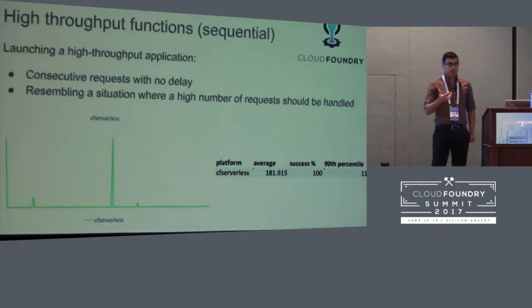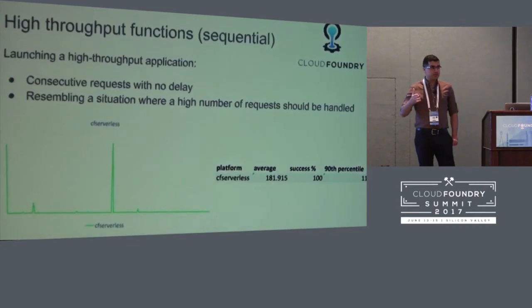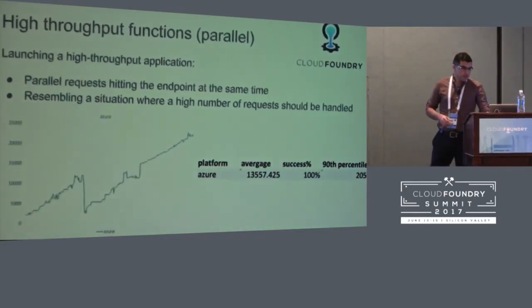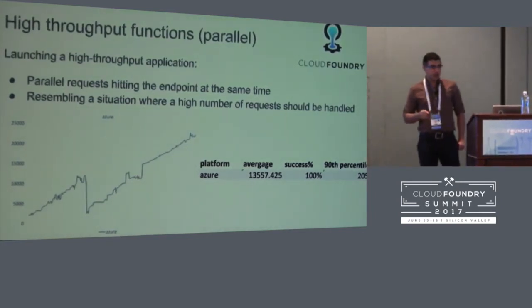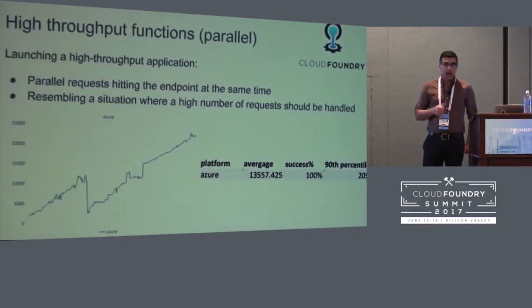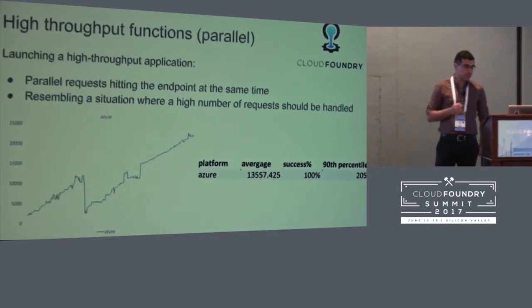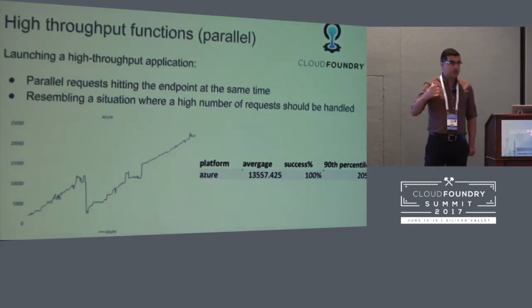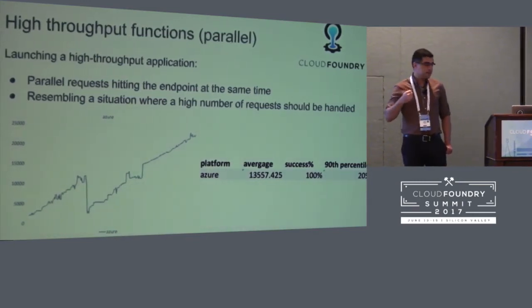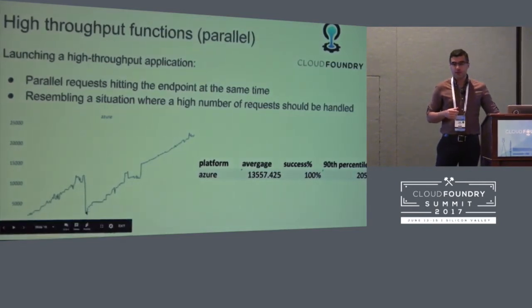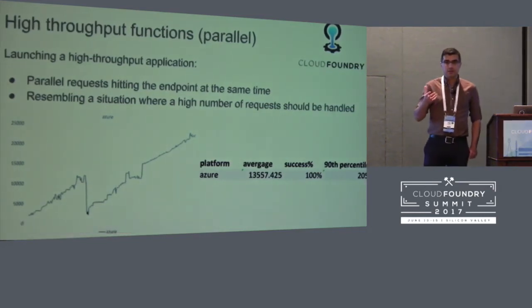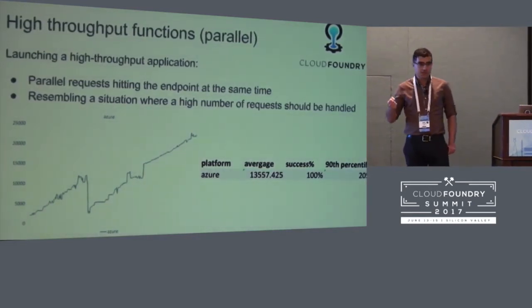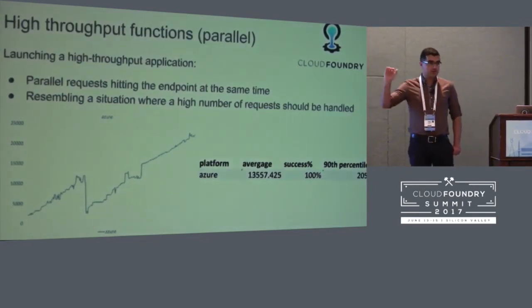If you delay more than 30 seconds in case of CF Serverless, we kill the container, so the next request takes another full startup time. Also, if you increase the load such that you need another instance to respond, you'd see a spike as a second container is created. Here is an example of a high-throughput echo function with all requests sent at the same time — these are results from Microsoft Azure. As we started sending more requests, response time got slower and slower, requests queued up, and then there was a sudden significant drop when Azure realized it should launch another container.